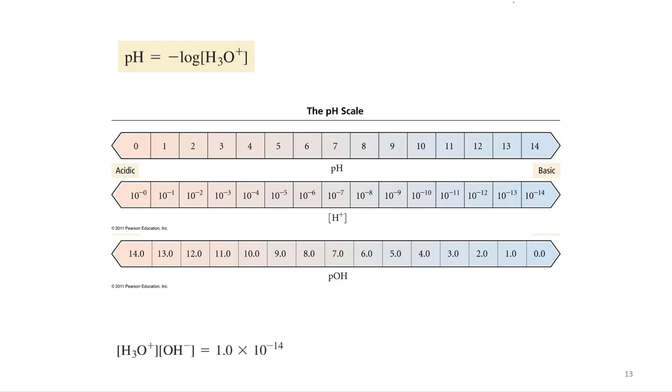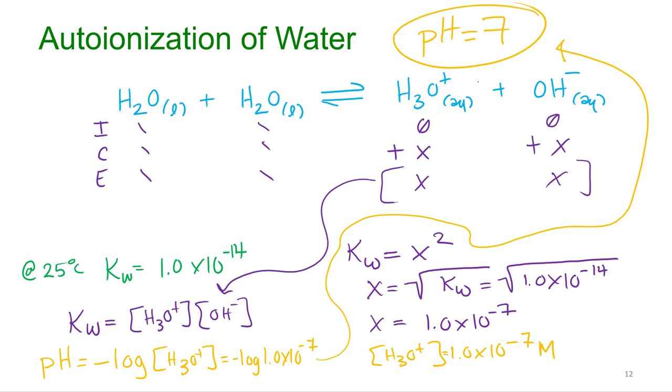All right, and then of course, we know that any pH less than 7 is acidic conditions, right? Any pH greater than 7 is basic, and that's just whether or not you've got more H3O+. If you've got more H3O+, your pH goes down. Or if you've got more hydroxide in basic conditions, your hydroxide goes up, your hydronium goes down.